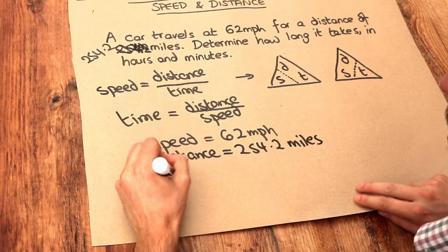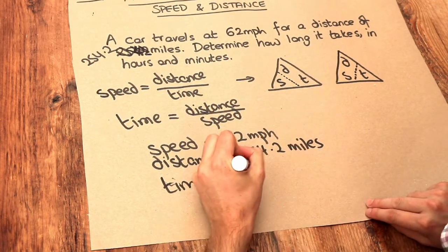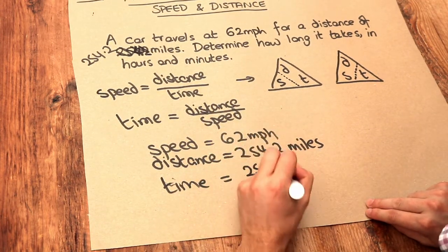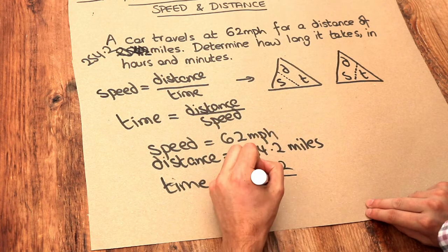So if we just put that into the formula, we get time is equal to the distance, which is 254.2 miles, over the speed, which is 62 miles per hour.